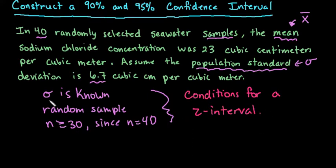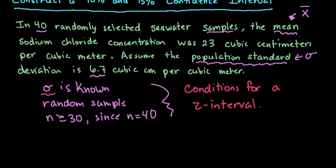We use a z-interval any time the population standard deviation is known. Most of the time, this is not going to be the case. If we don't know something about the population mean, we probably don't know the population standard deviation. So of the two intervals for the confidence intervals for means, the z-interval is used less frequently. But since we have the conditions for the z-interval, let's go ahead and start with that.